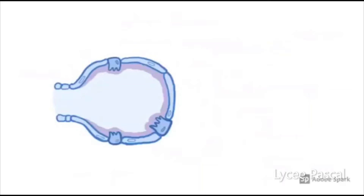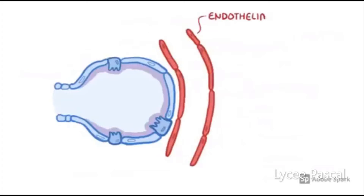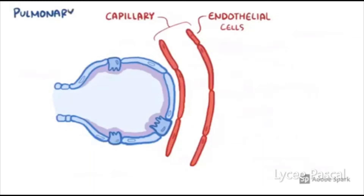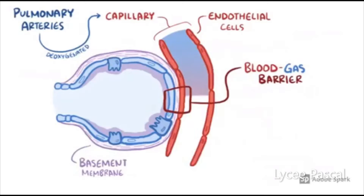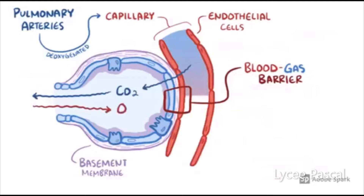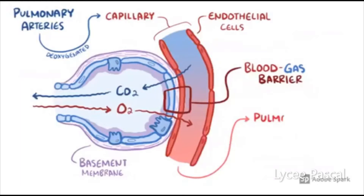In the alveolus, gas is exchanged with the blood capillaries. The blood capillaries are rich with deoxygenated blood that comes from the pulmonary arteries. Carbon dioxide diffuses from the deoxygenated blood in the capillary into the air in the alveolus and is breathed out. With each breath in, oxygen enters the alveolus and diffuses into the blood. That oxygenated blood then travels to the pulmonary vein, to the heart, and then to the body's tissues.